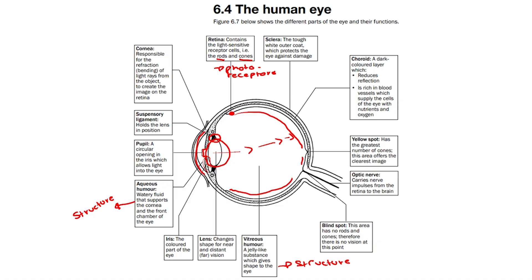Then we have the blind spot, which is this spot over here. The blind spot is an area that has no rods or cones. Therefore, there is no vision at this point, as there are no photoreceptors.